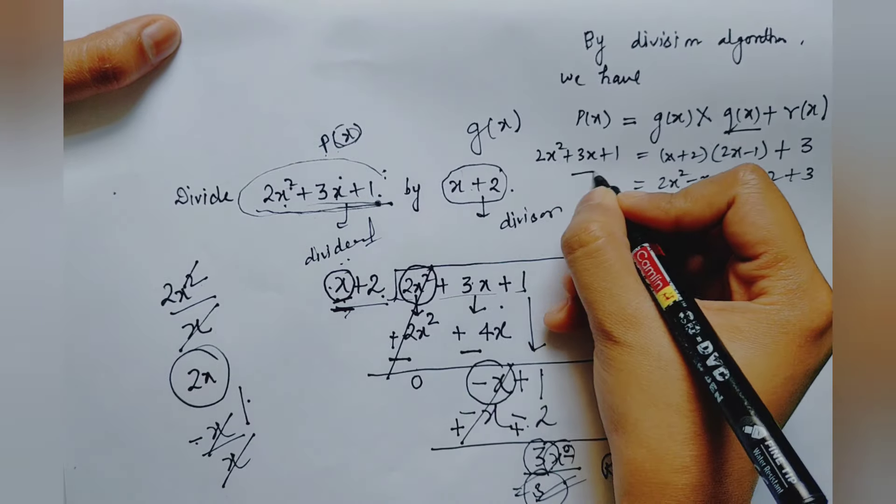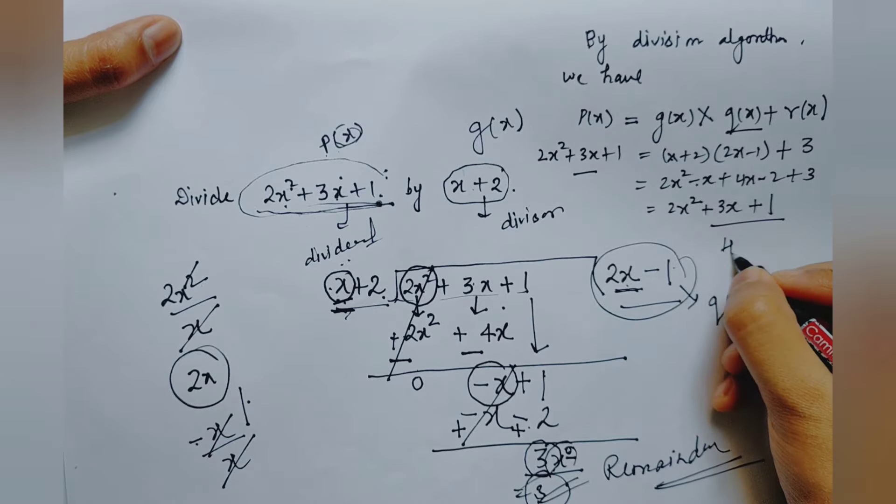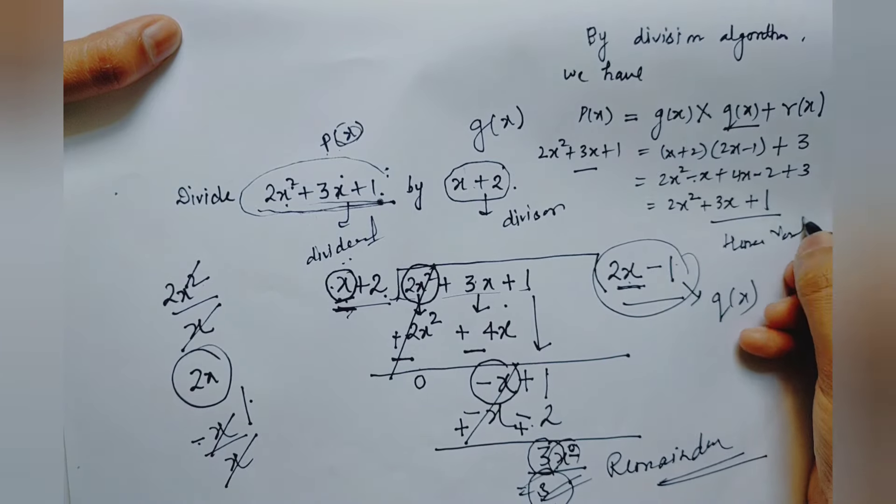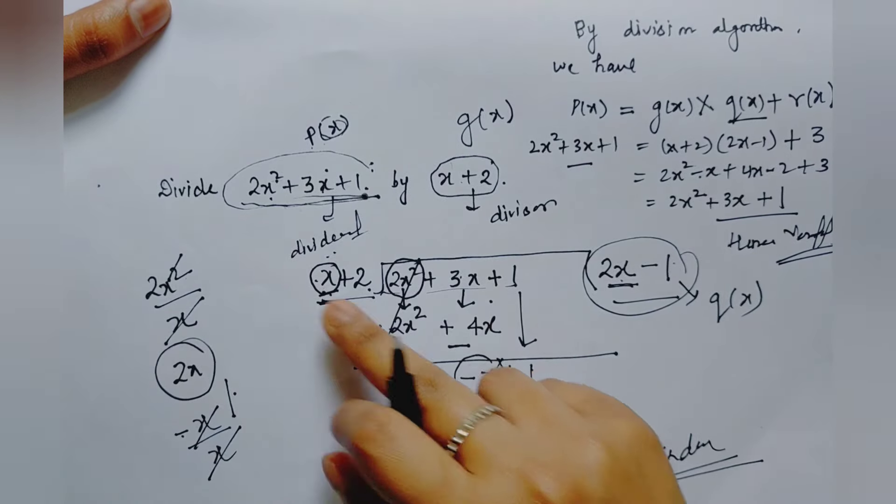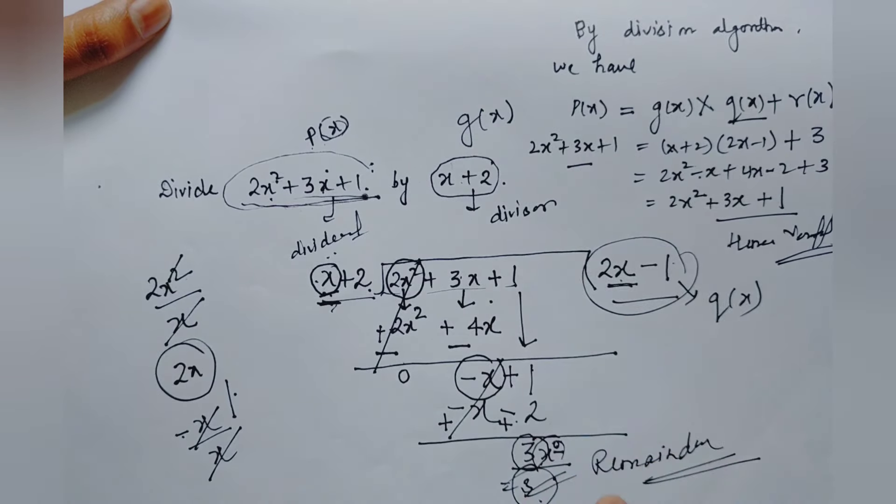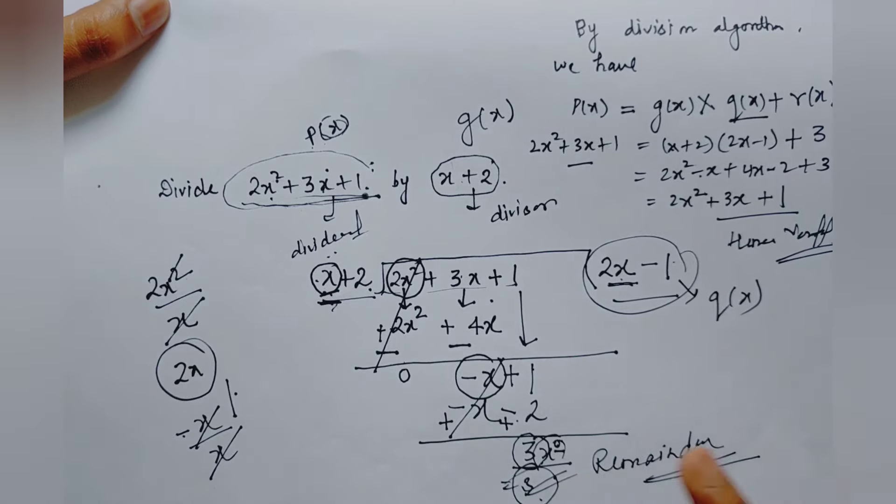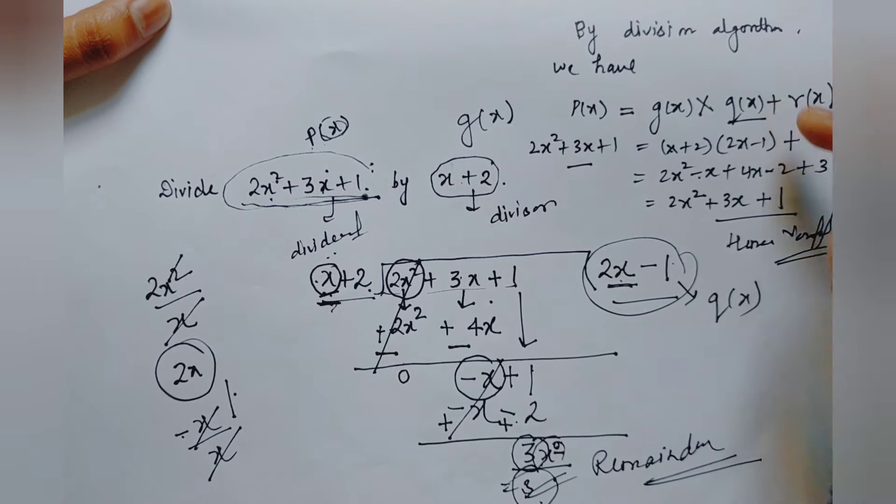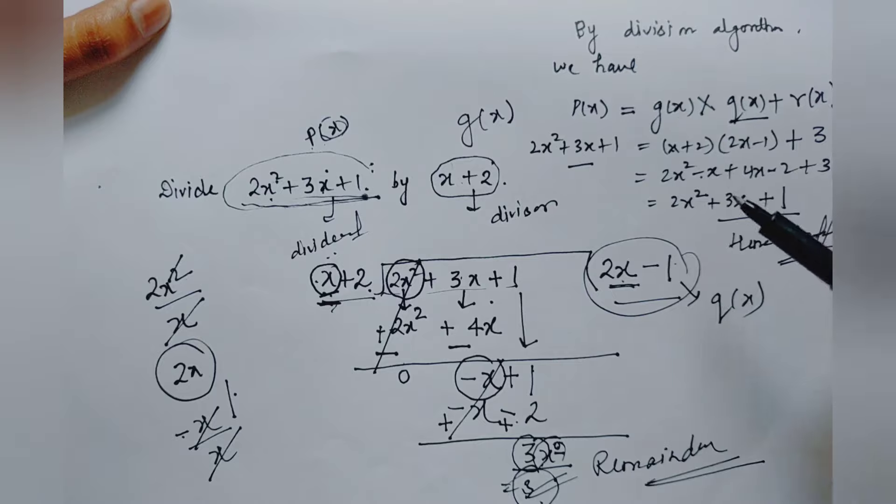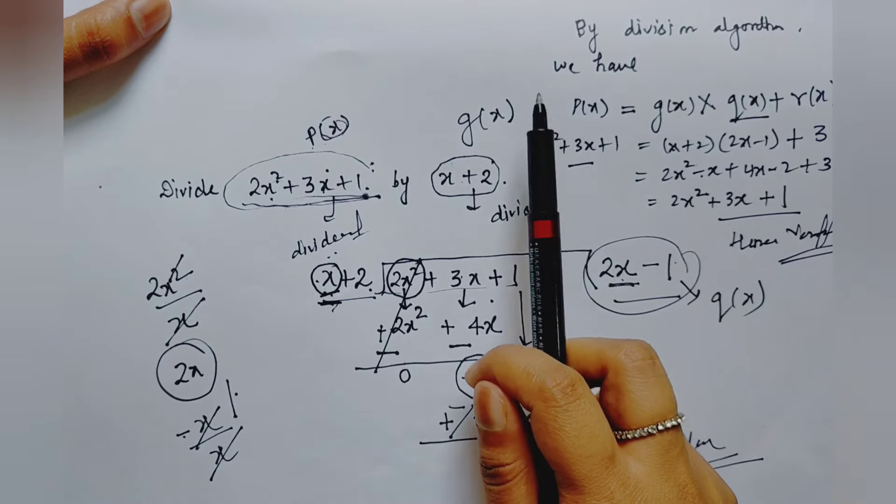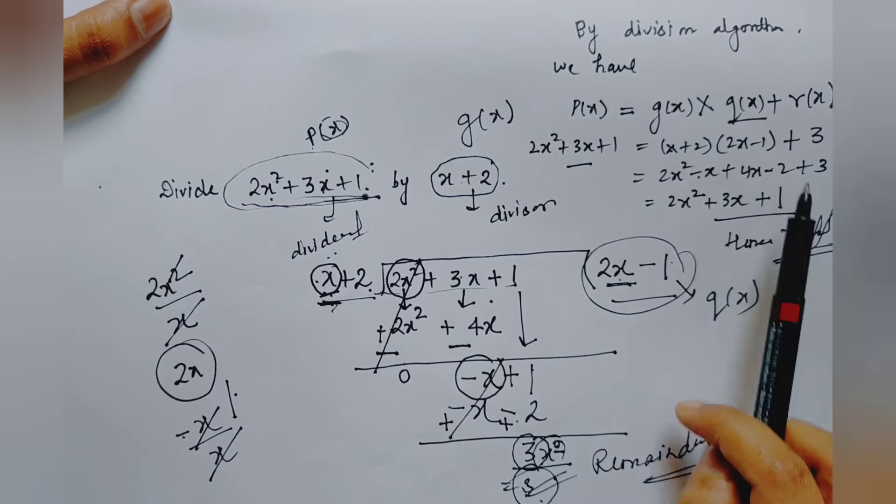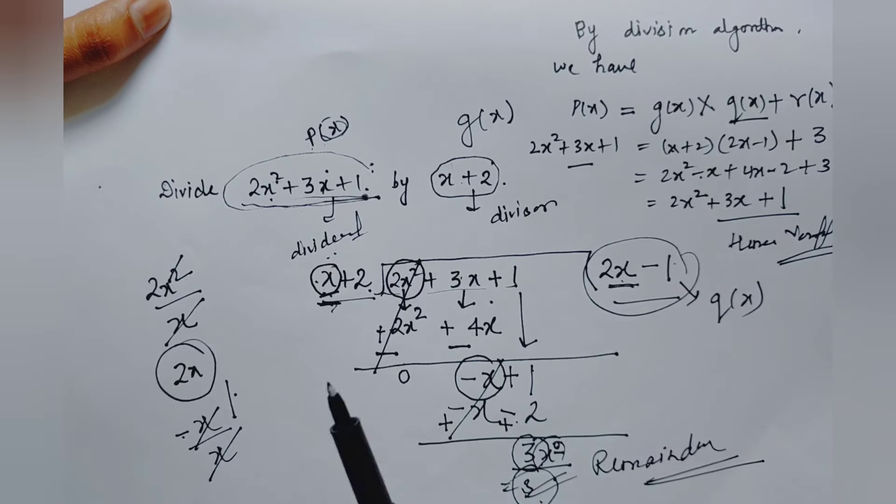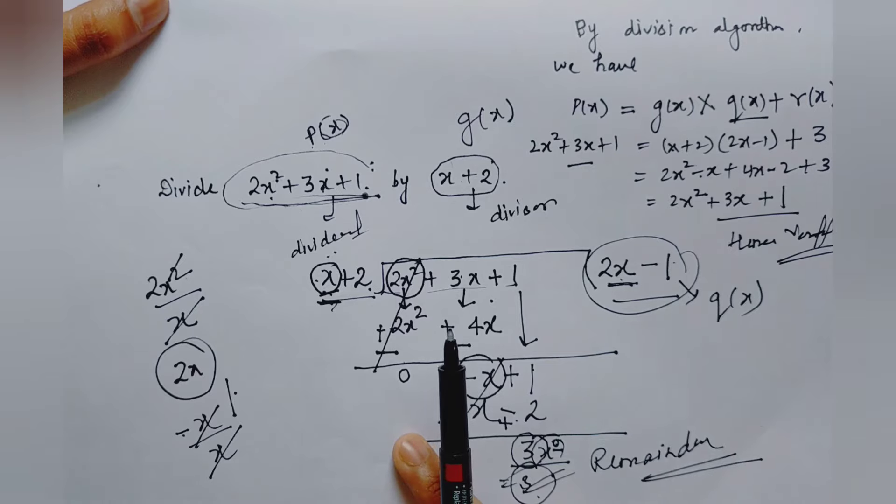That equals 2x squared, 4x minus x is 3x, and minus 2 plus 3 is plus 1. See, left side equals right side. Hence verified. This way first we find our quotient by dividing and we find the remainder. After that we use the division algorithm to prove our relation by writing everything in place of P(x), g(x), q(x), and r(x).